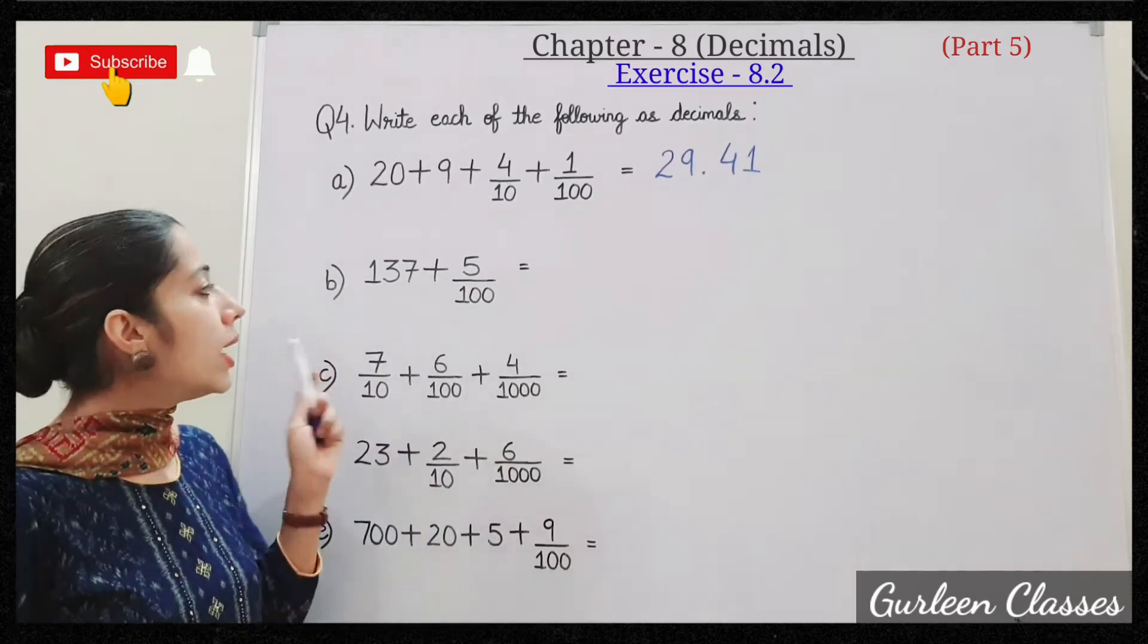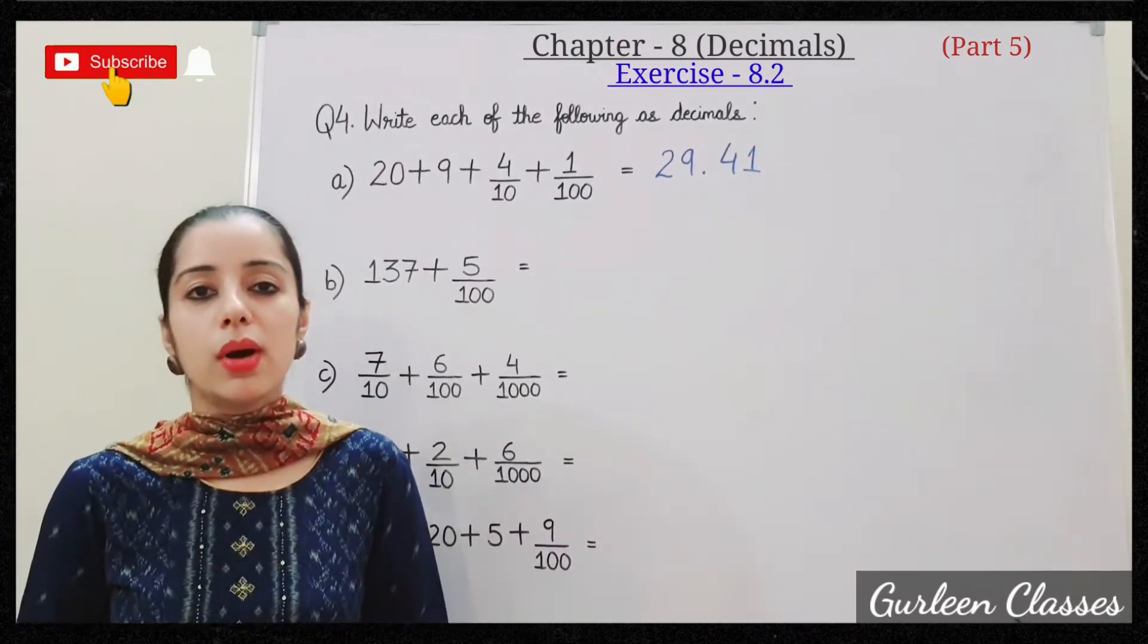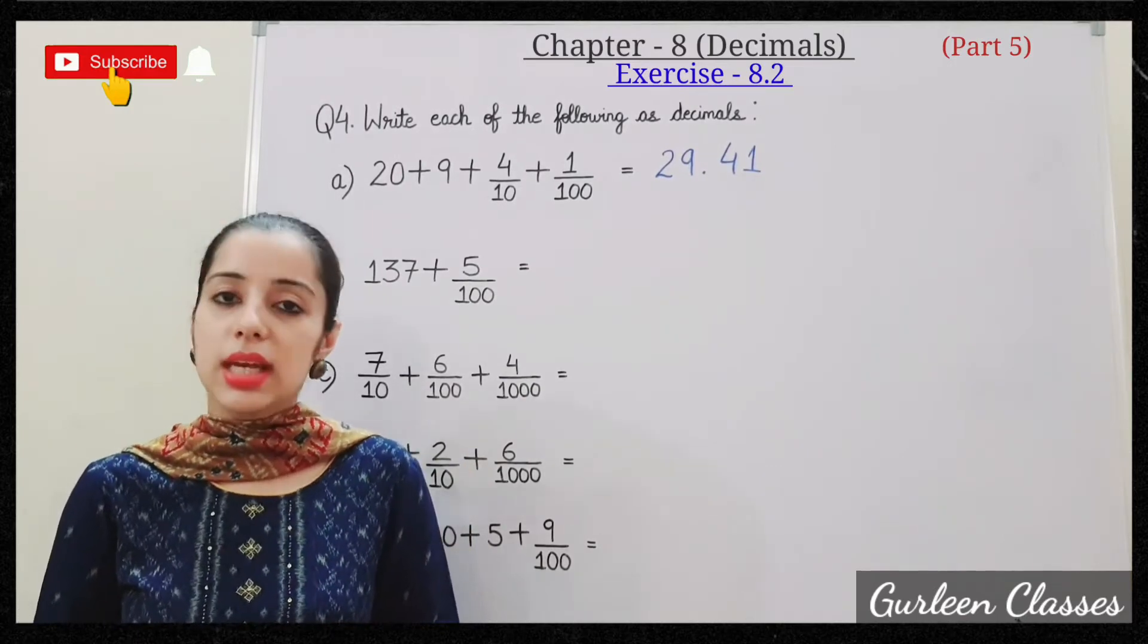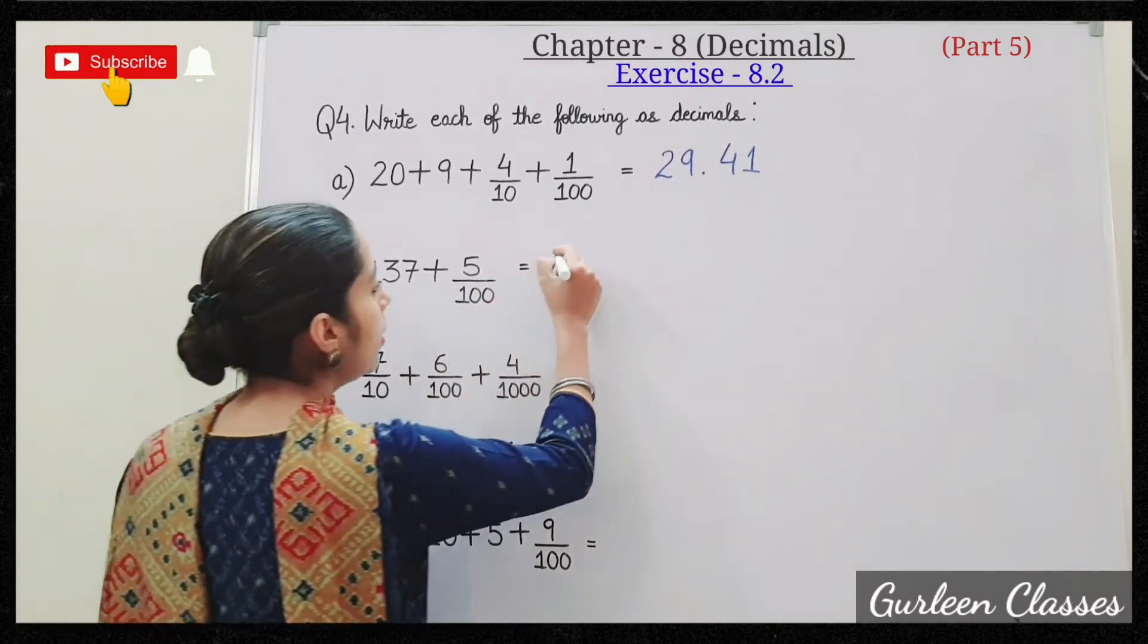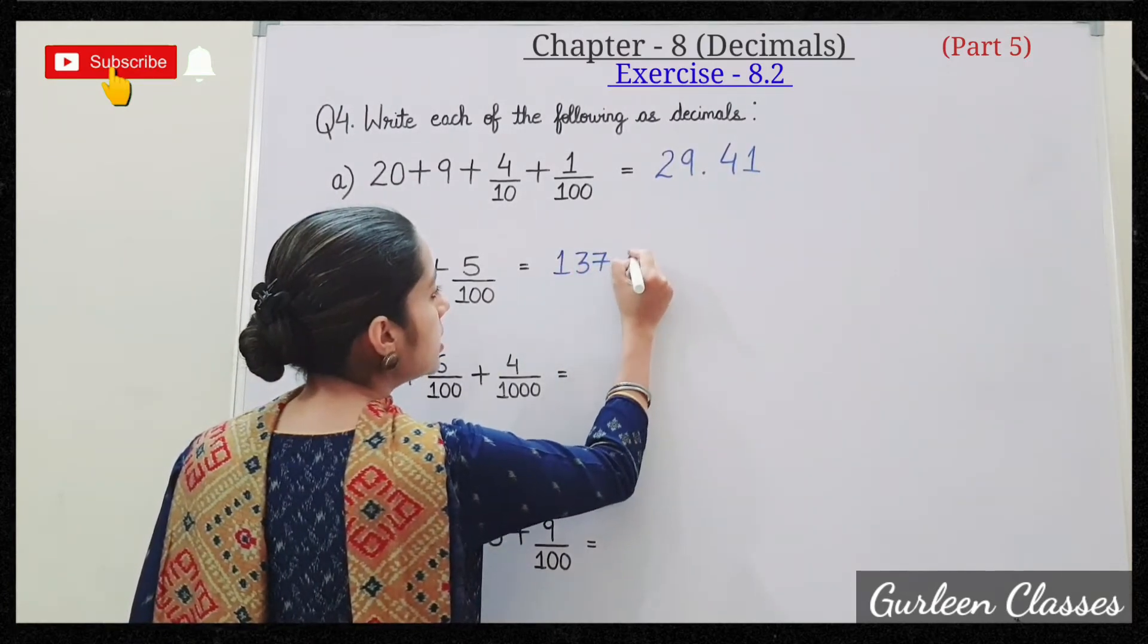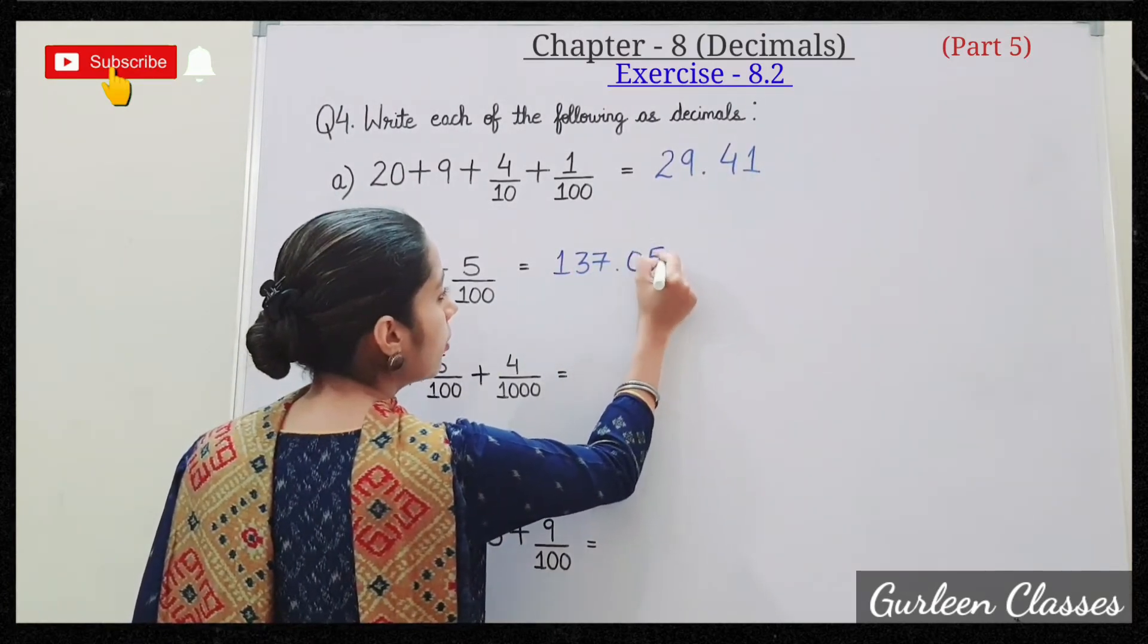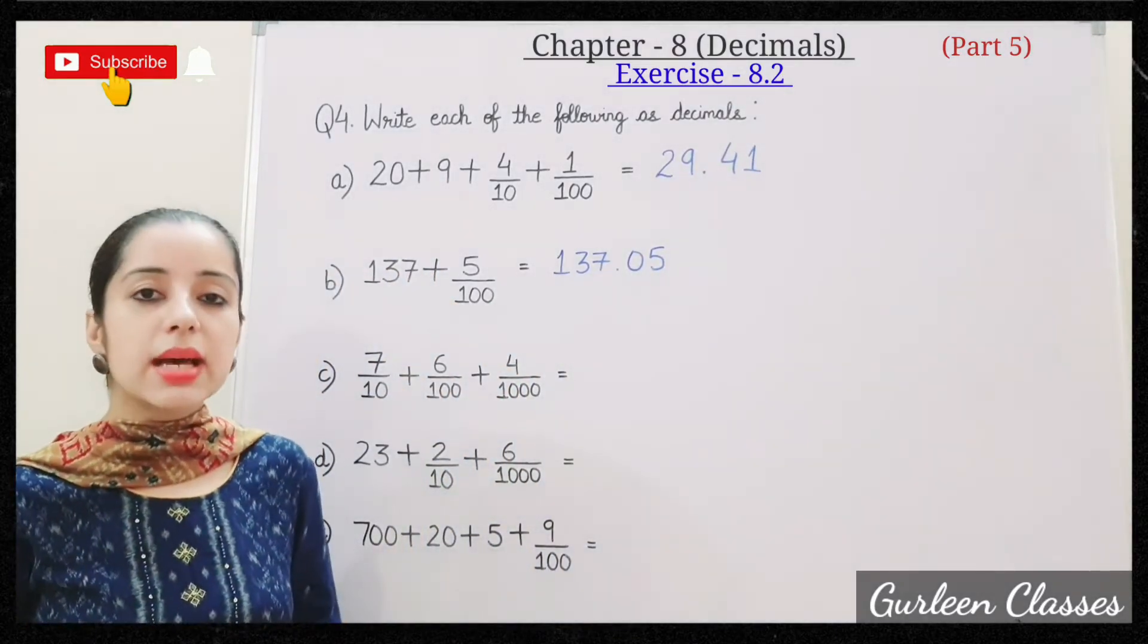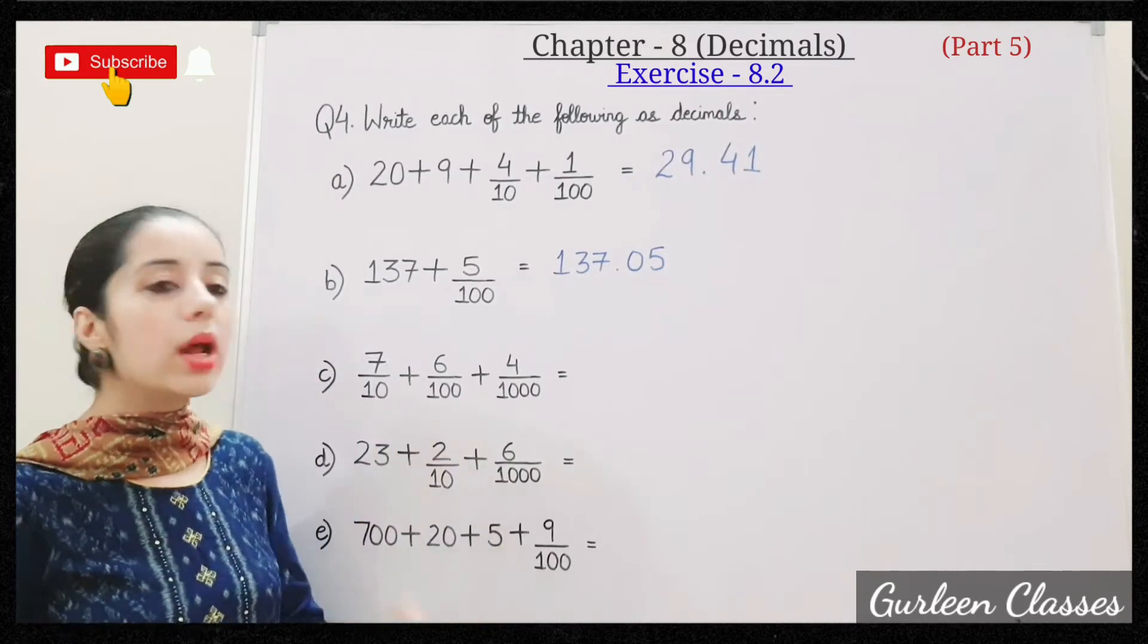B: 137 plus 5 upon 100. So here tenths place is missing, we will put 0. So it is 137.05.